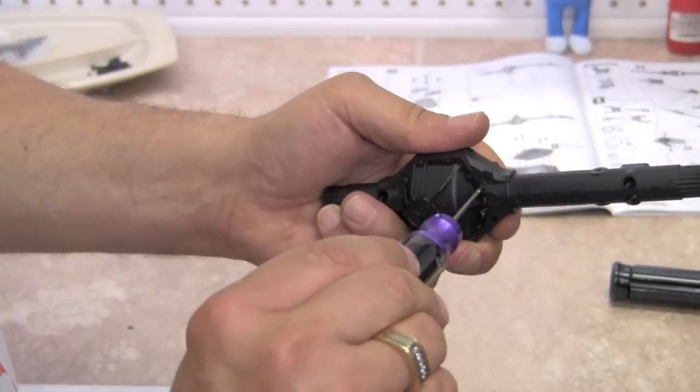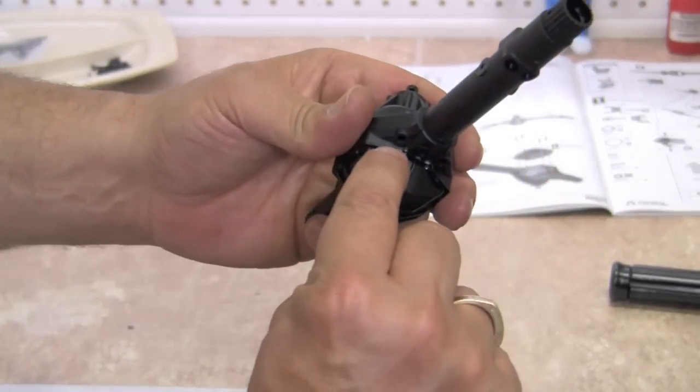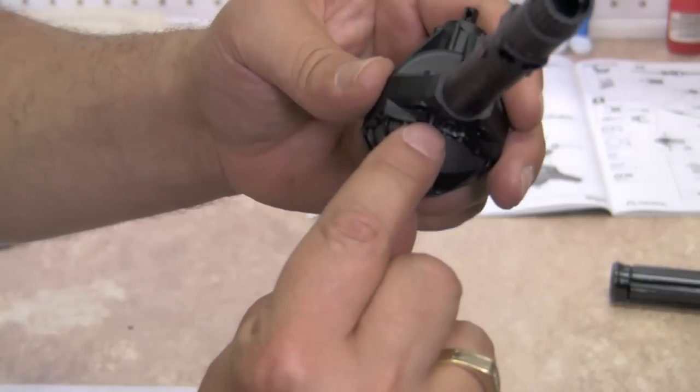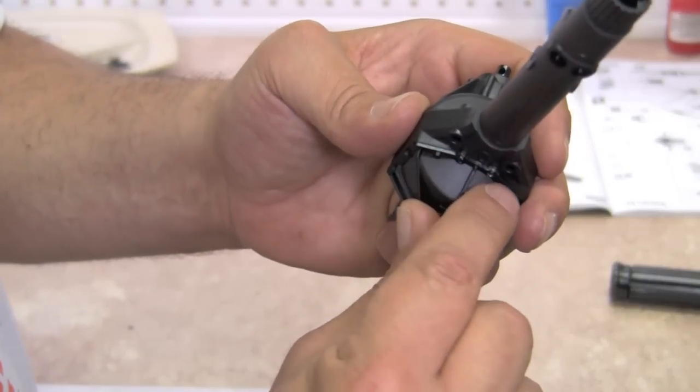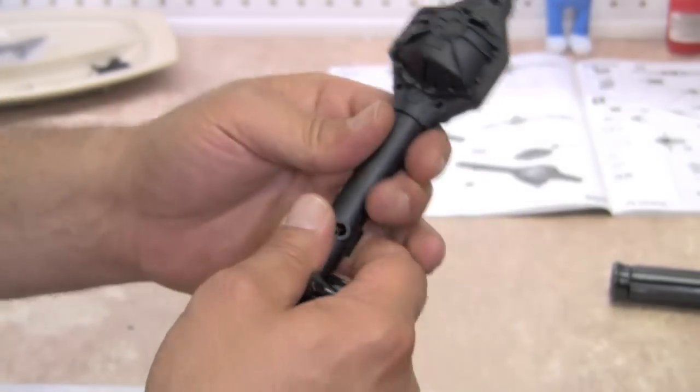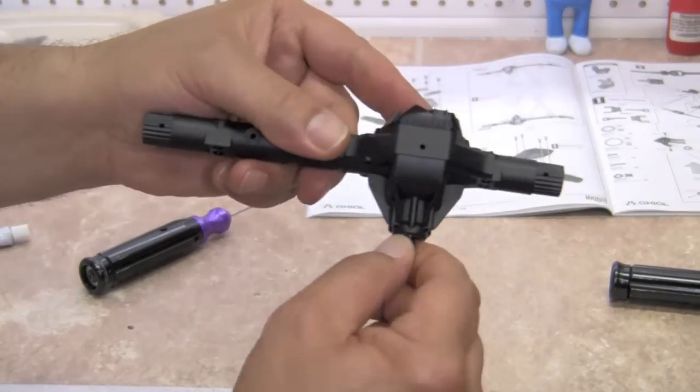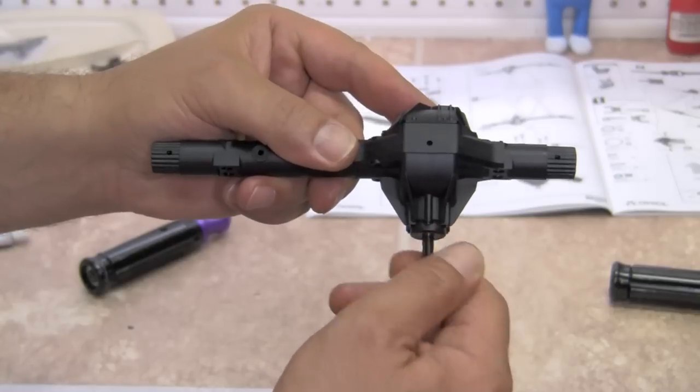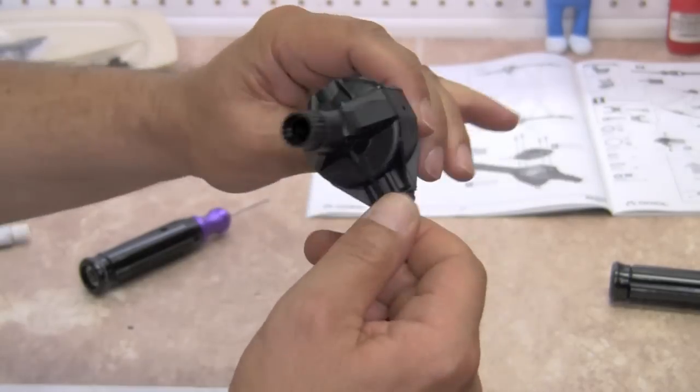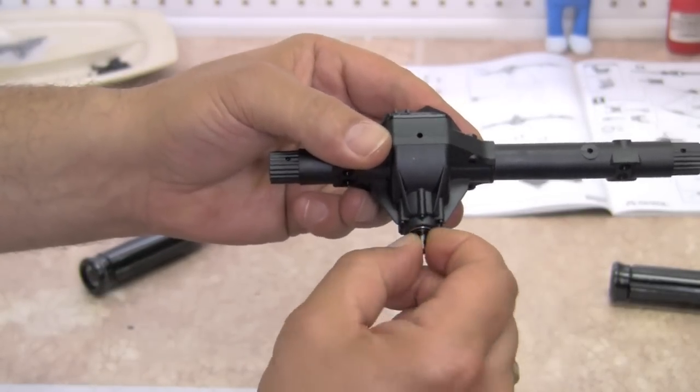All right, we've got those in. And again, don't tighten them too much because it is very, very thin plastic. And you don't want to split that out. Once that's on, we're going to again check for binding. If at any time you get some binding, back up a step, take a look. Find out why it's binding and take care of it. But you want these to be free spinning.